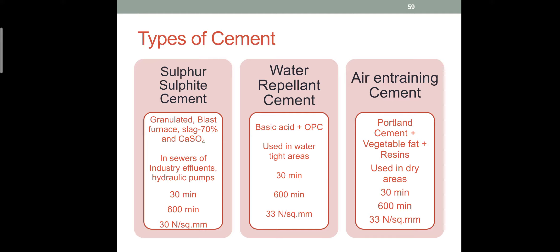Air entrainment cement is especially used in dry areas — desert areas where humidity is very high and the air is very dry. Normal cement is used but some amount of resins and vegetable fats are added, giving it a sticky, slimy nature. Initial setting time is 30 minutes, final setting time is 10 hours, and strength is 33 N/mm².